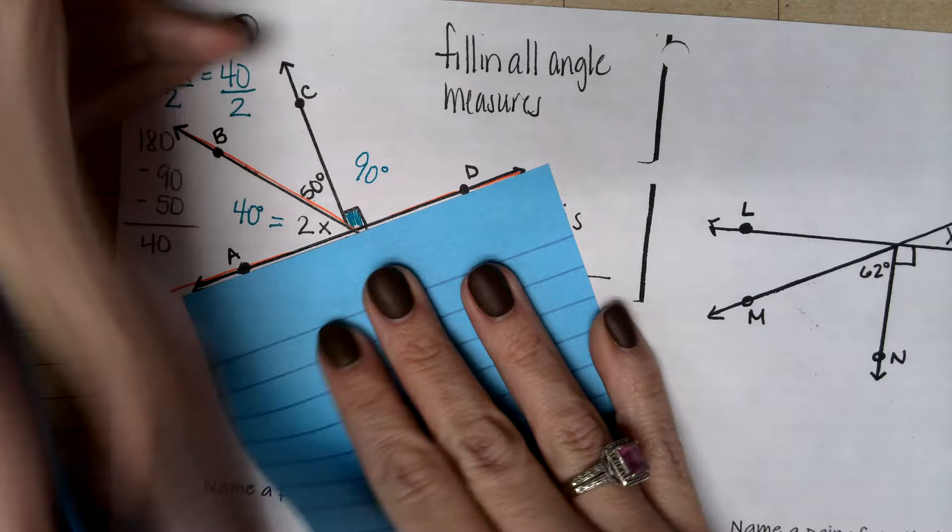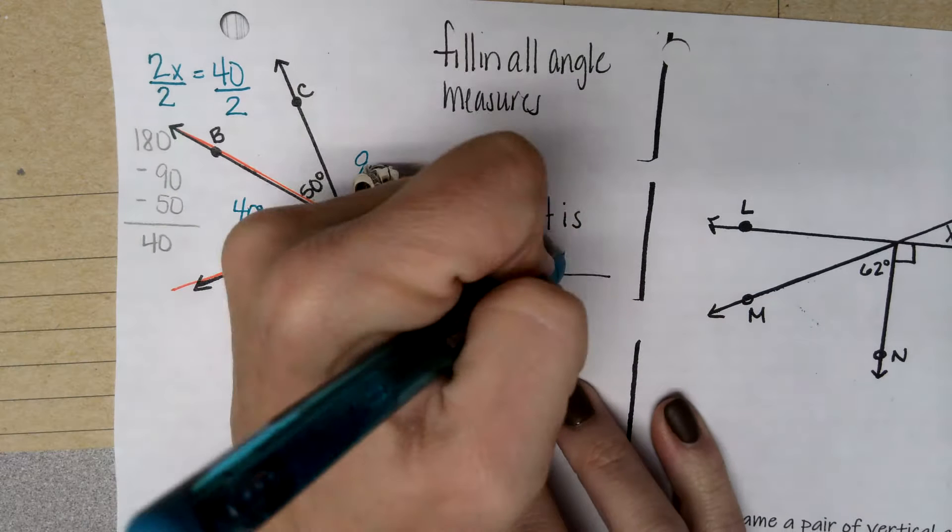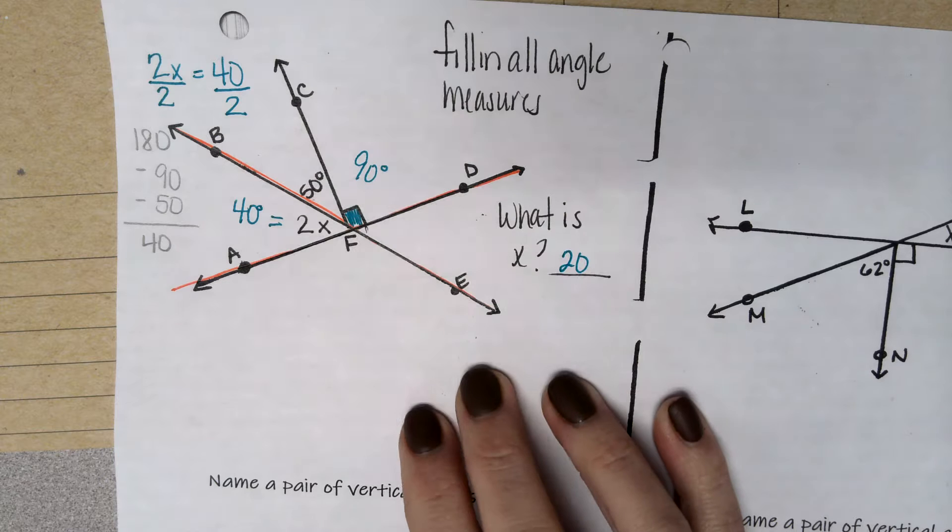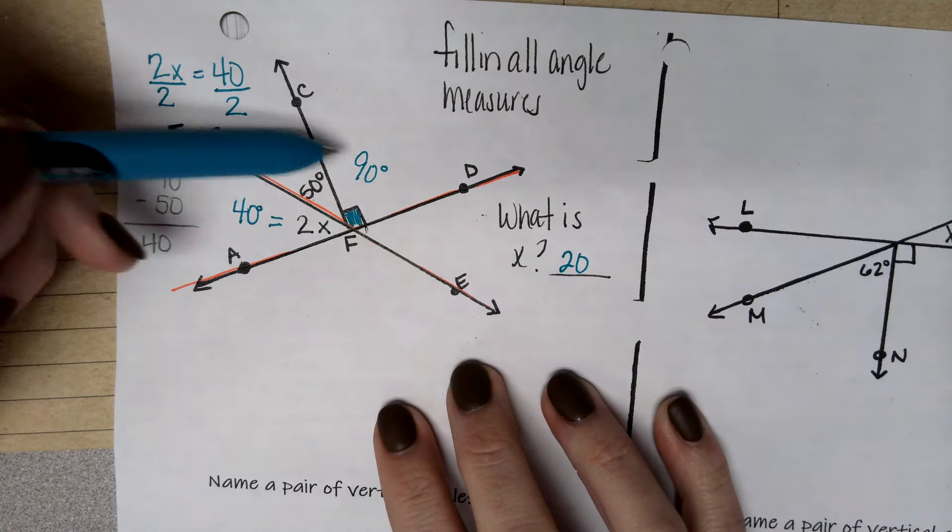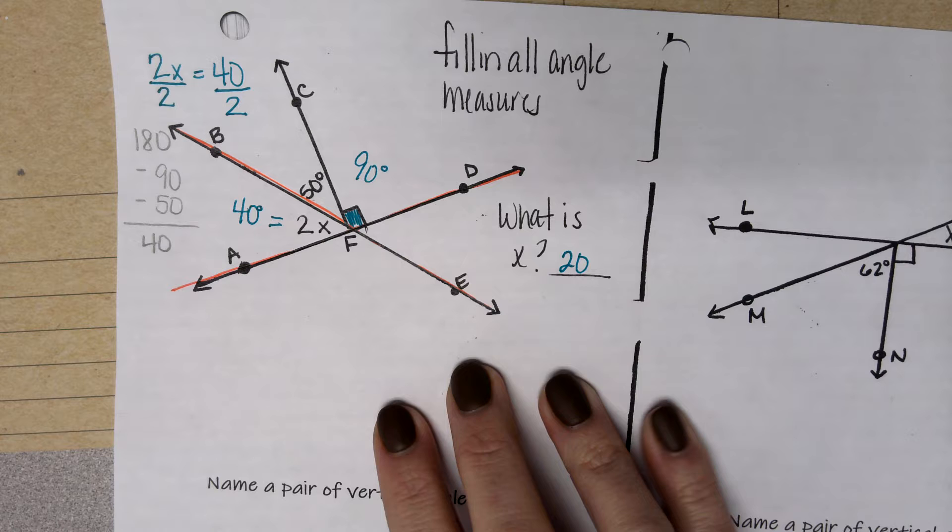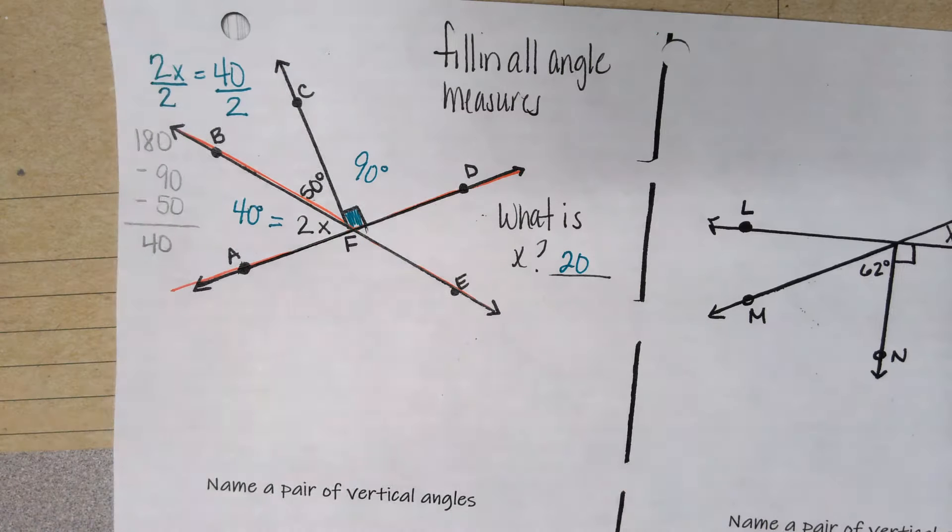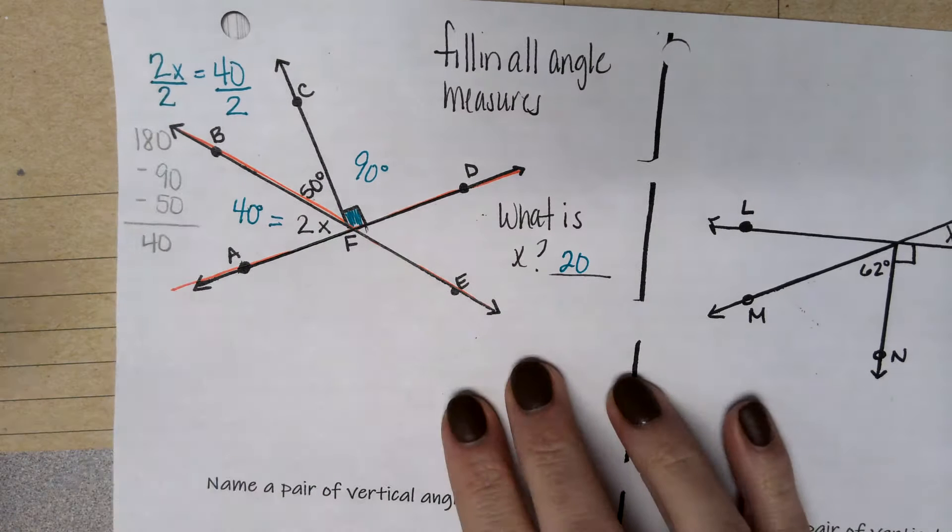So for this, I'm going to uncover this now. It says, what is x? x is 20. So we have half of these angles now labeled. We have this 40, this 50, and this 90. So what we need to do is we need to look at these other spots and fill them in.